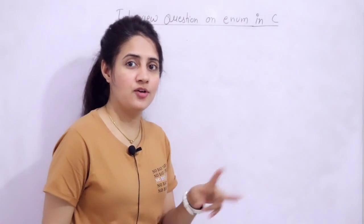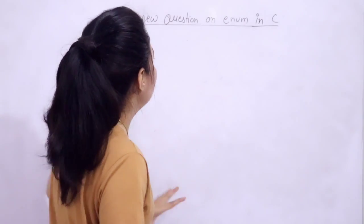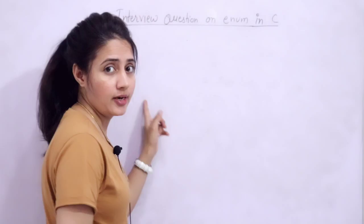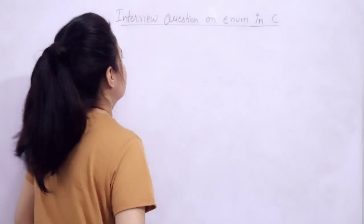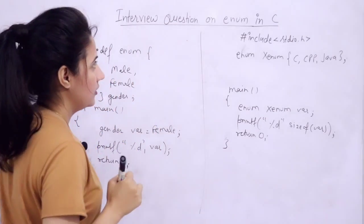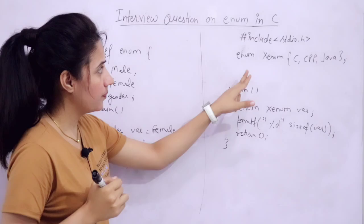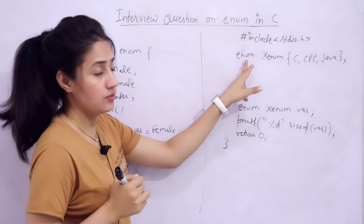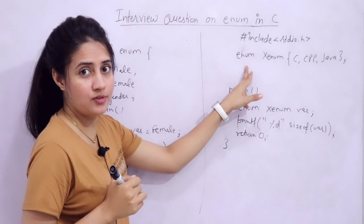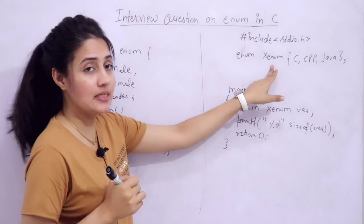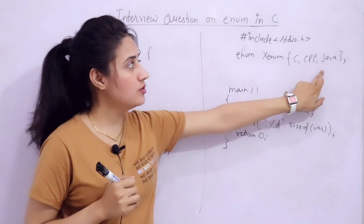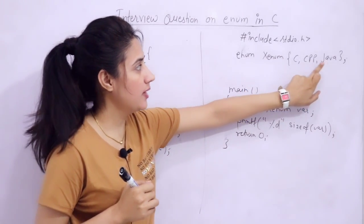All relevant links and details I'll put in the description box. Now let's see those two interview questions on enum. Outside main, we have defined a data type with enum x_enum. The list of constants is c, cpp, and java.